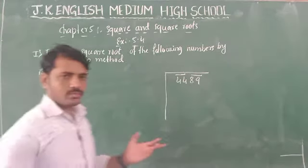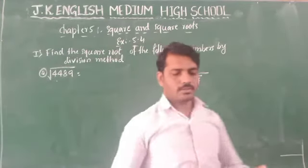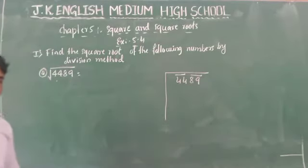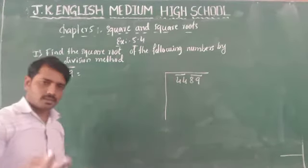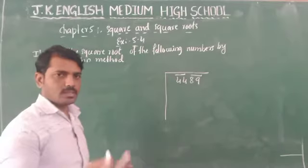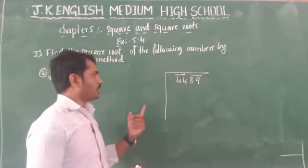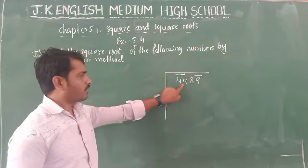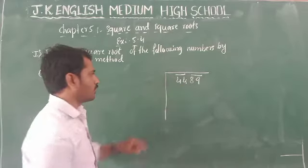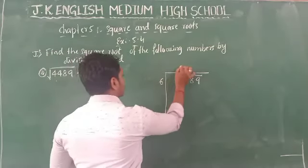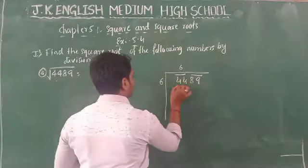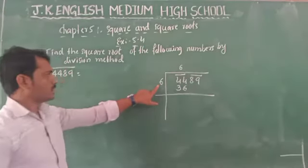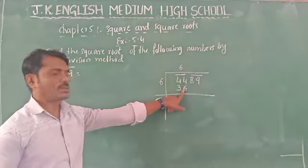We check squares: 2×2=4, 3×3=9, 4×4=16, 5×5=25, 6×6=36, 7×7=49. Since we have 44 as our first group and 49 is more than 44, we take 6×6=36. So 6 is the first digit of the answer. Subtract 36 from 44, giving remainder 8. Bring down the next group 89 to get 889. Double the quotient: 6+6=12.